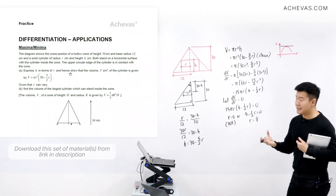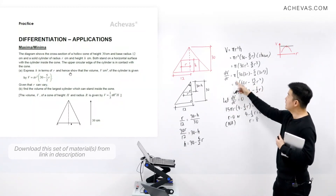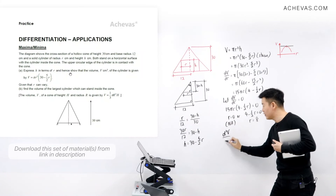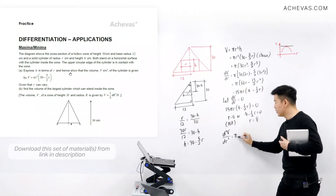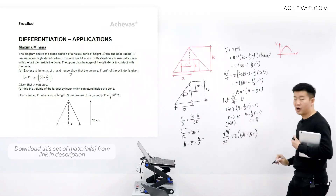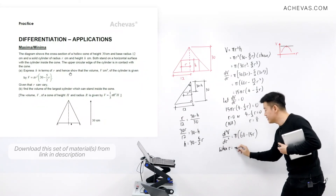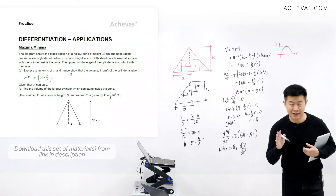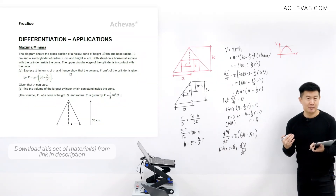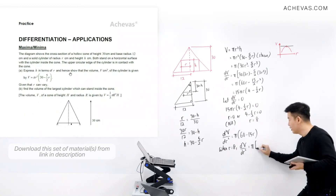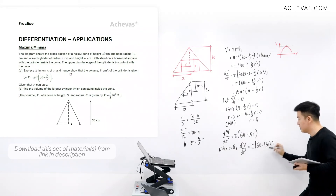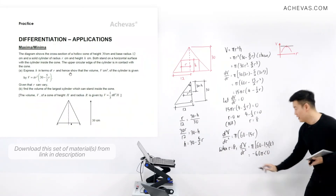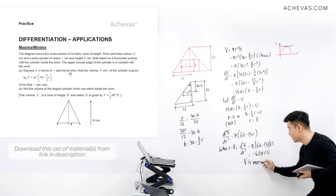Applying the second derivative test, we differentiate dV/dr = π(60r − (15/2)r²) again to get d²V/dr² = π(60 − 15r). When r = 8, d²V/dr² = π(60 − 120) = −60π, which is less than zero. Therefore, V is experiencing its maximum value at r = 8.